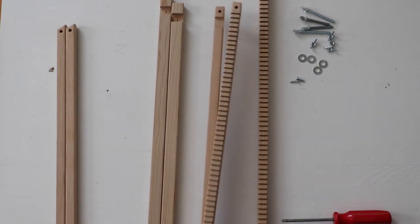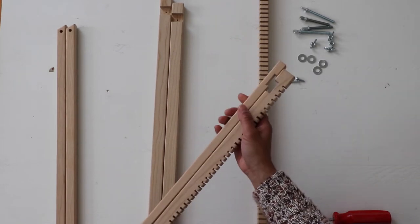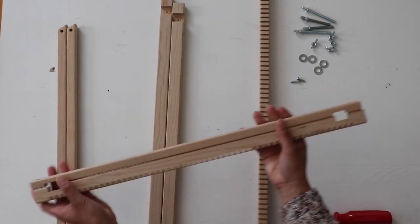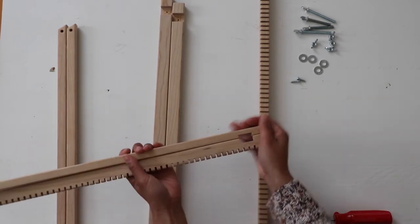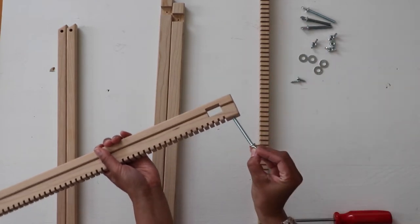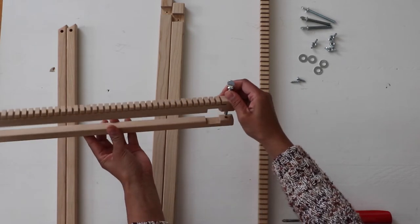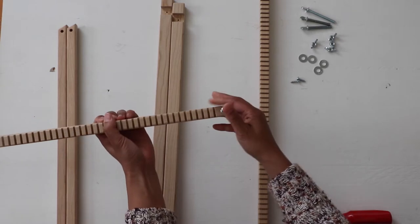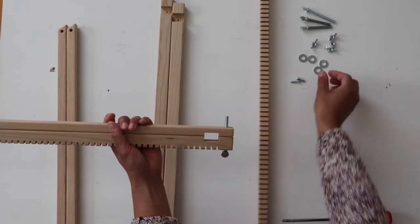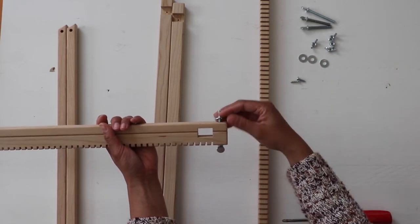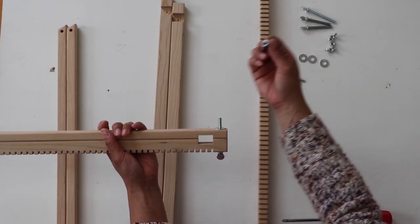So let's take the adjustable piece and we're going to line it up like this and take a bolt and just slip it in this and then we'll do a washer and one of these guys.